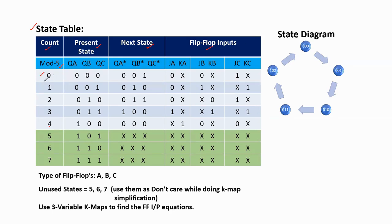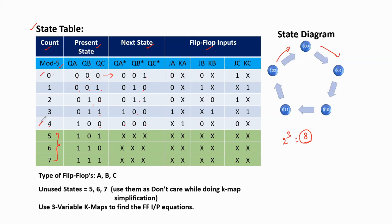Now let us take the total number of states 0 to 4, written in binary form: 000, 001, 010, 011, 100. In the present state column, for 0 the next state is 1 (001), for 1 the next state is 2 (010), for 2 it is 3 (011), for 3 it is 4 (100), and for 4 the sequence repeats back to 0 (000). The remaining states 5, 6, and 7 are unused states because we are using 3 bits giving 2³ = 8 combinations total. These unused states 5, 6, 7 are taken as don't cares for next state and flip-flop input values.